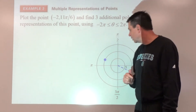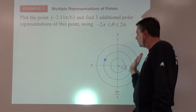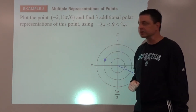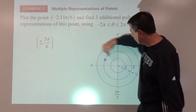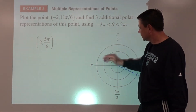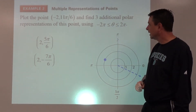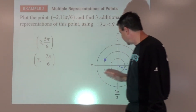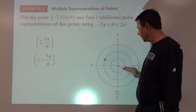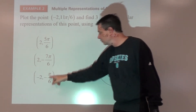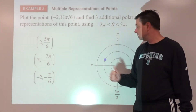Here are three other representations. First, go direct: two units at angle five pi over six — that works. Second, go two units the other way: angle negative seven pi over six — that also works. Third, use negative two again but instead of eleven pi over six, go the other way: negative pi over six, then shoot across with negative two. Those are three other ways, under that condition, to represent the same point.